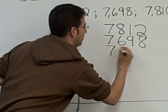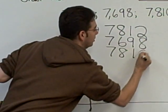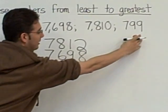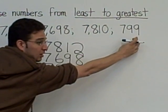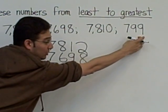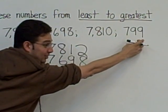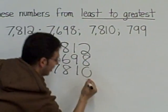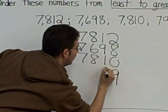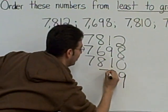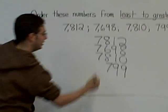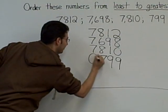These are very simple. 799 — the 9 is in what place? Ones. So we have to put it underneath the ones. 799 will go here; put a smiley face in the empty space.